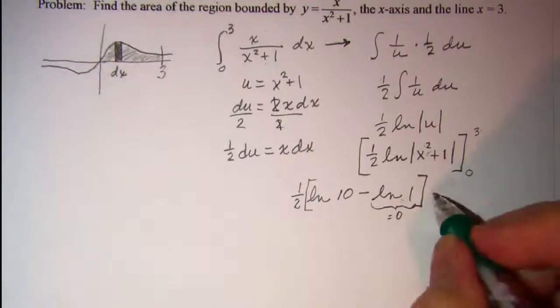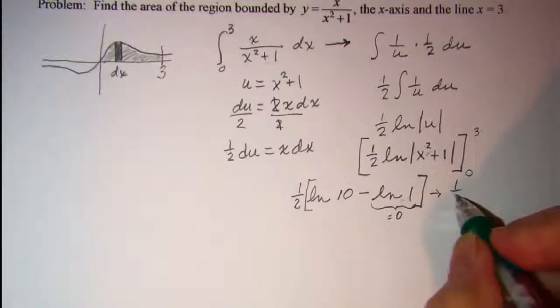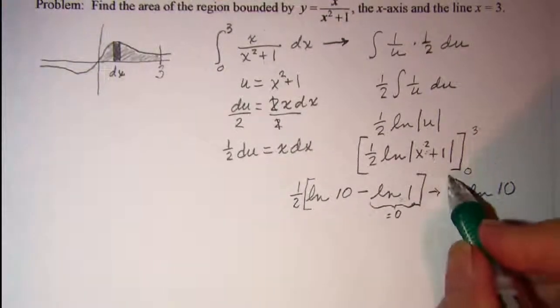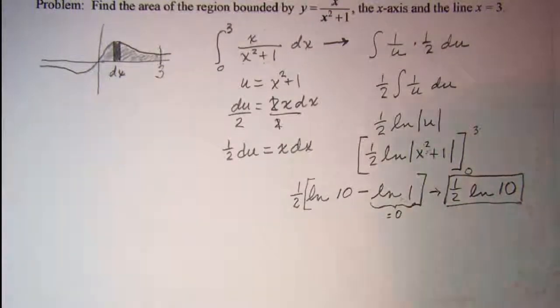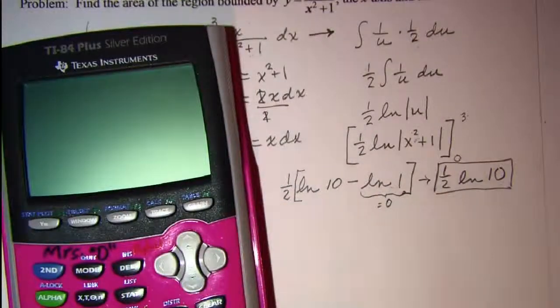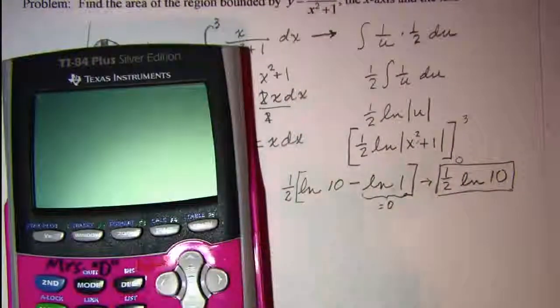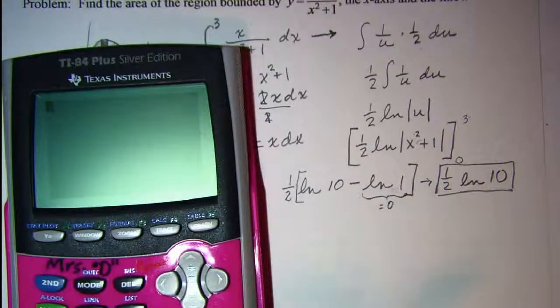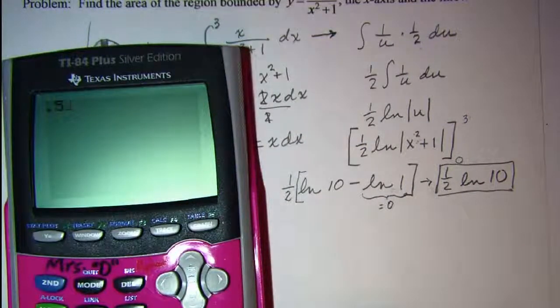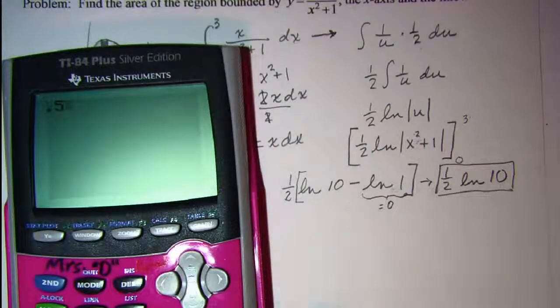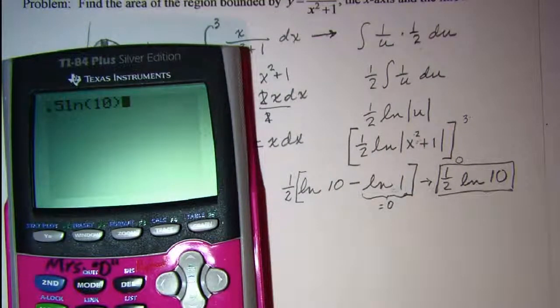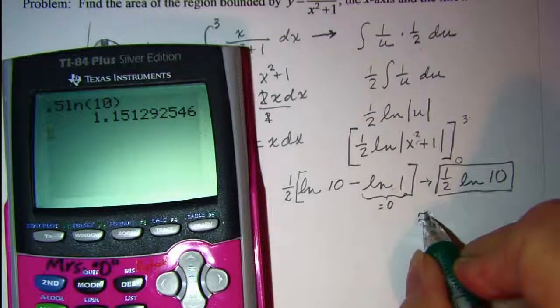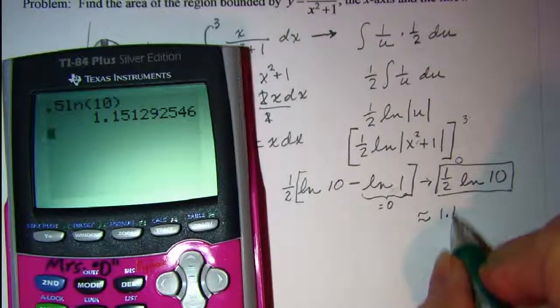So I have 1 half ln 10. If I wanted to get a value for that, I'll use 0.5 ln 10, and that looks like approximately 1.15.